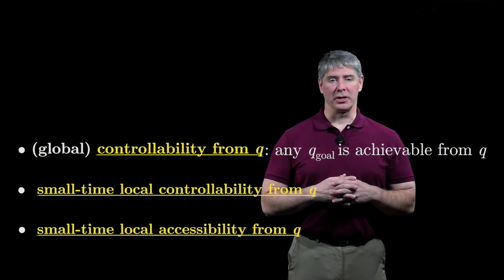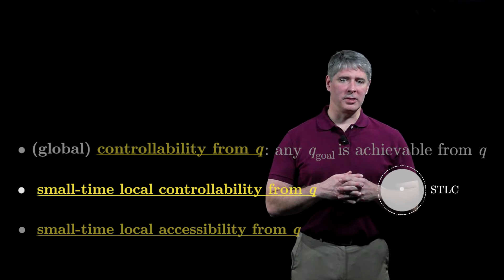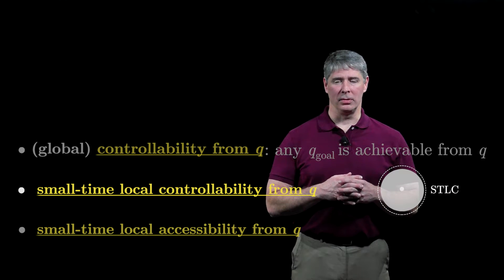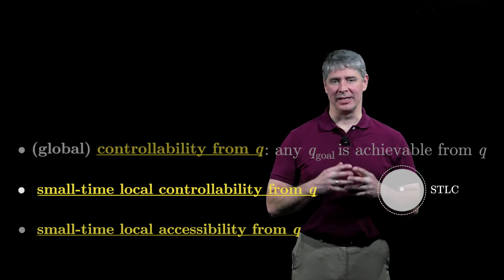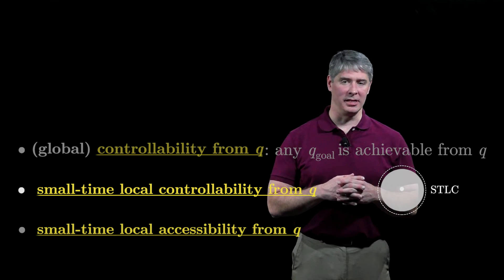Returning now to our controllability definitions, the robot is small-time locally controllable from q, or STLC, if the locally reachable set is full-dimensional and contains the initial configuration in the interior.